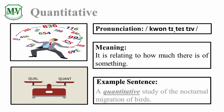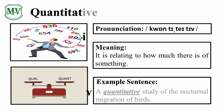Please repeat the word after me. Quantitative. Good job! Let's spell it. Q-U-A-N-T-I-T-A-T-I-V-E — Quantitative. Great! The Quantitative Study of the Nocturnal Migration of Birds. Can you try reading the sentence on your own? Great!